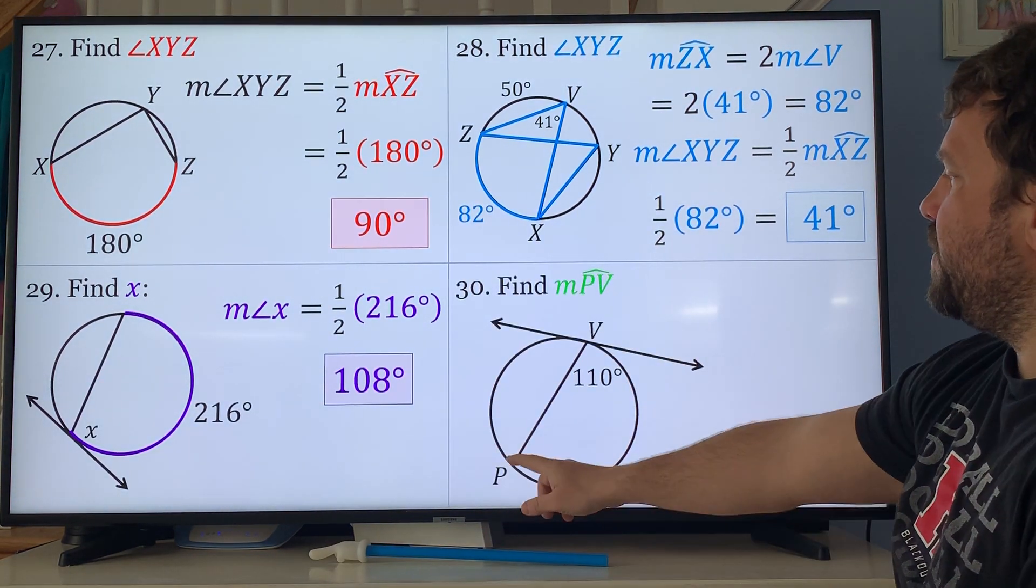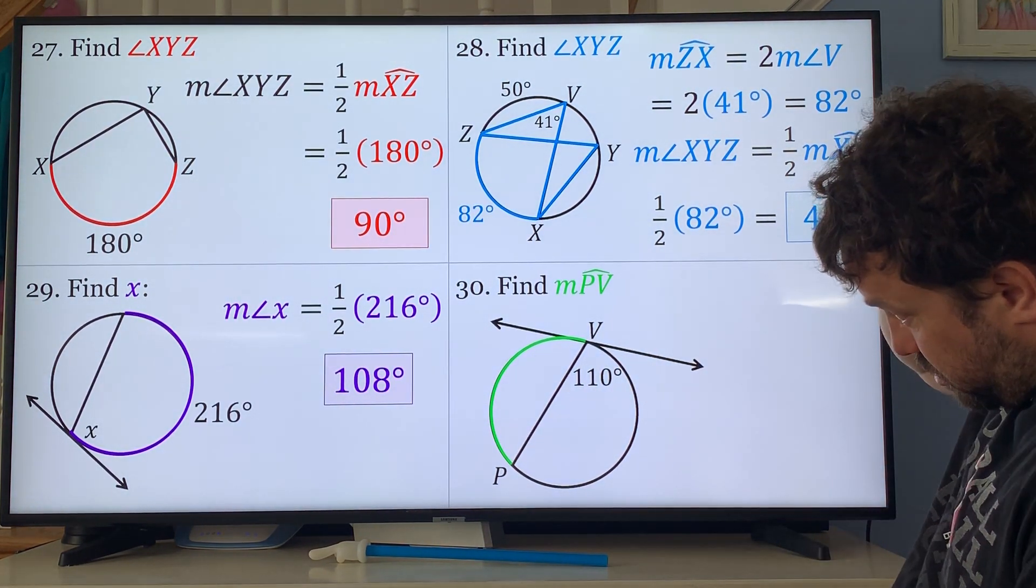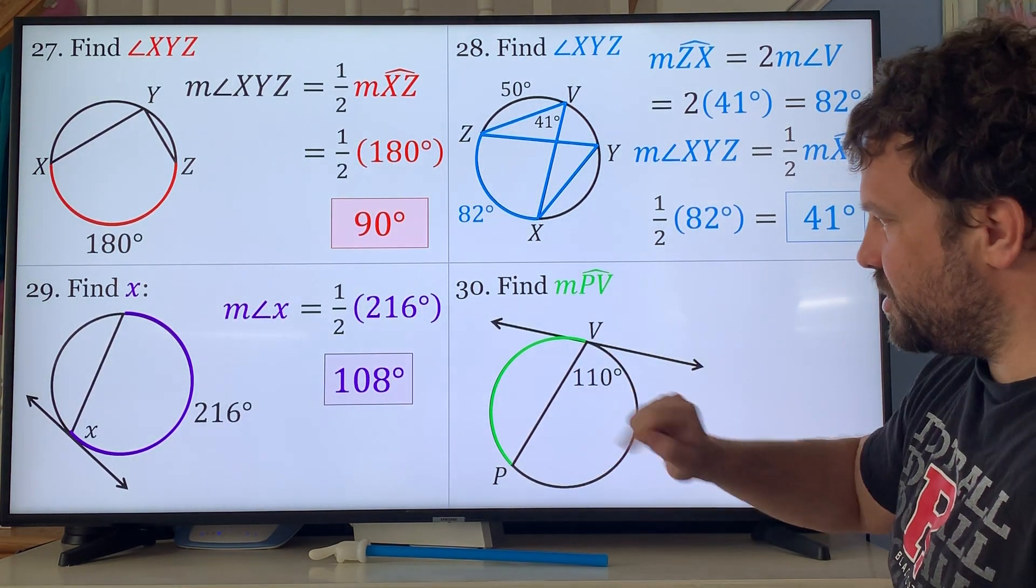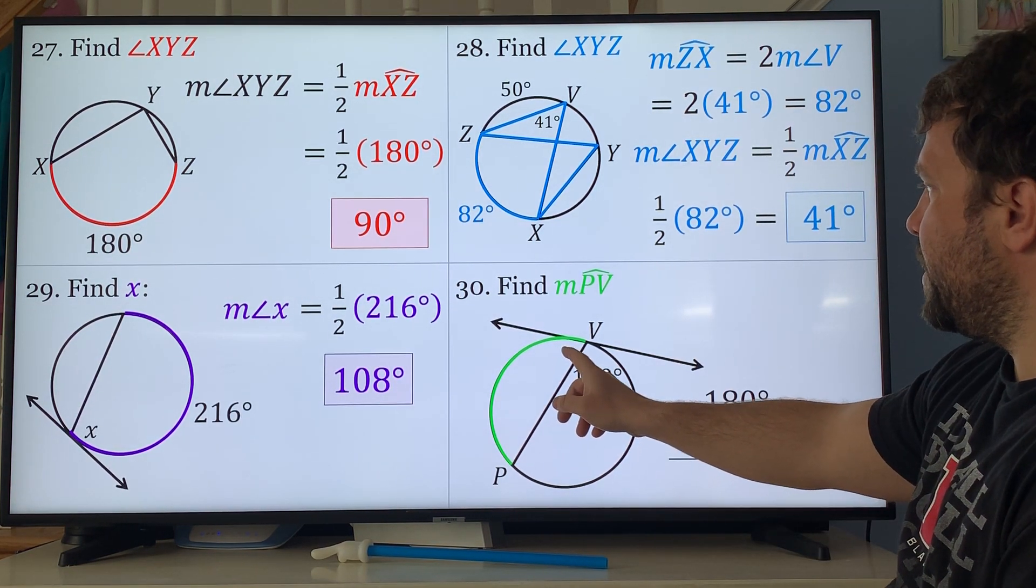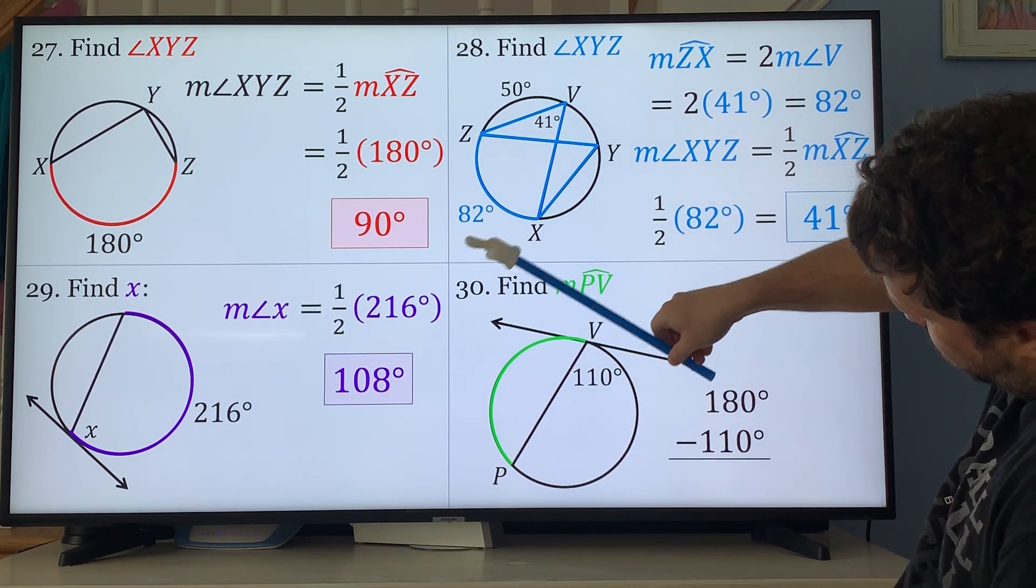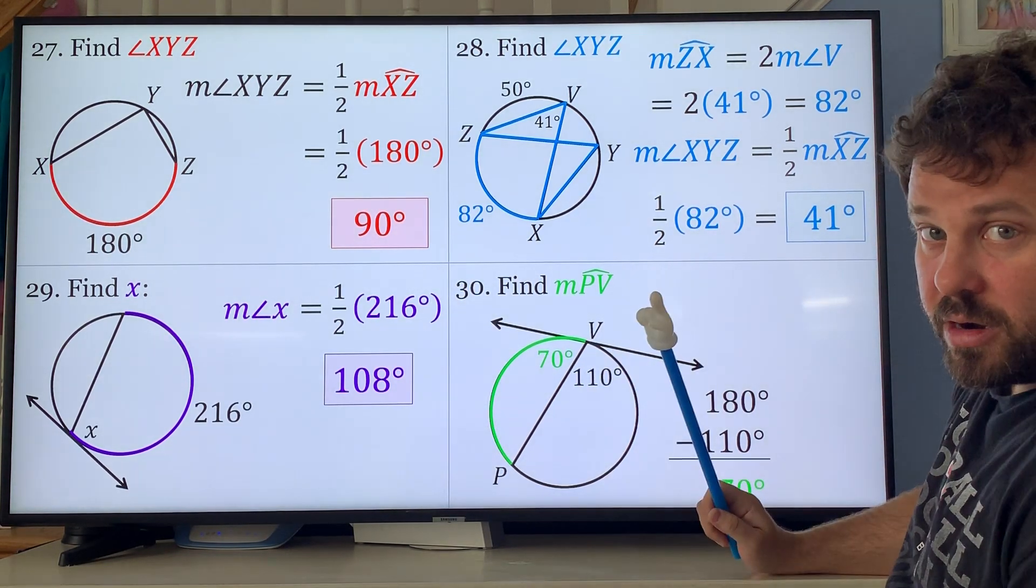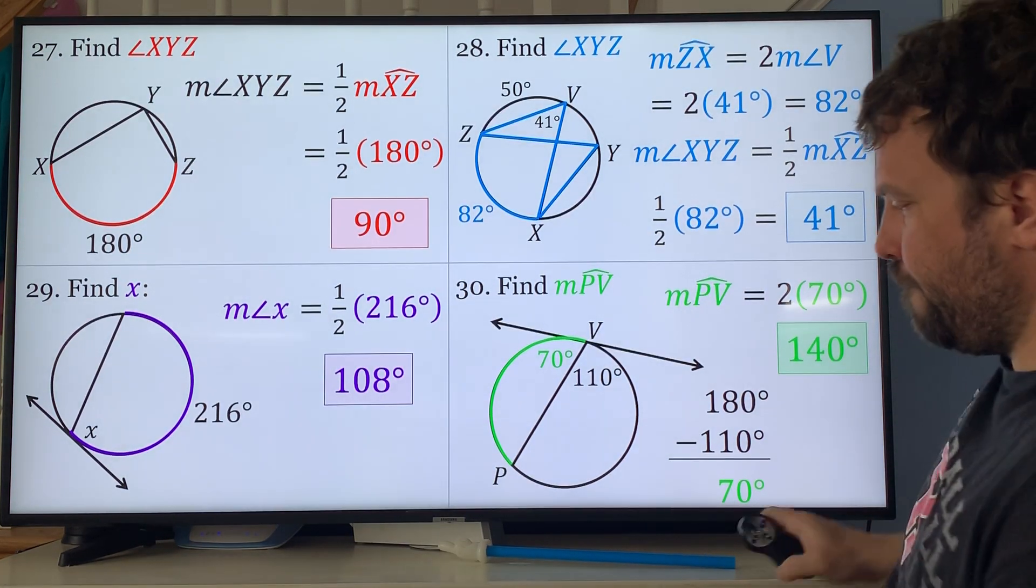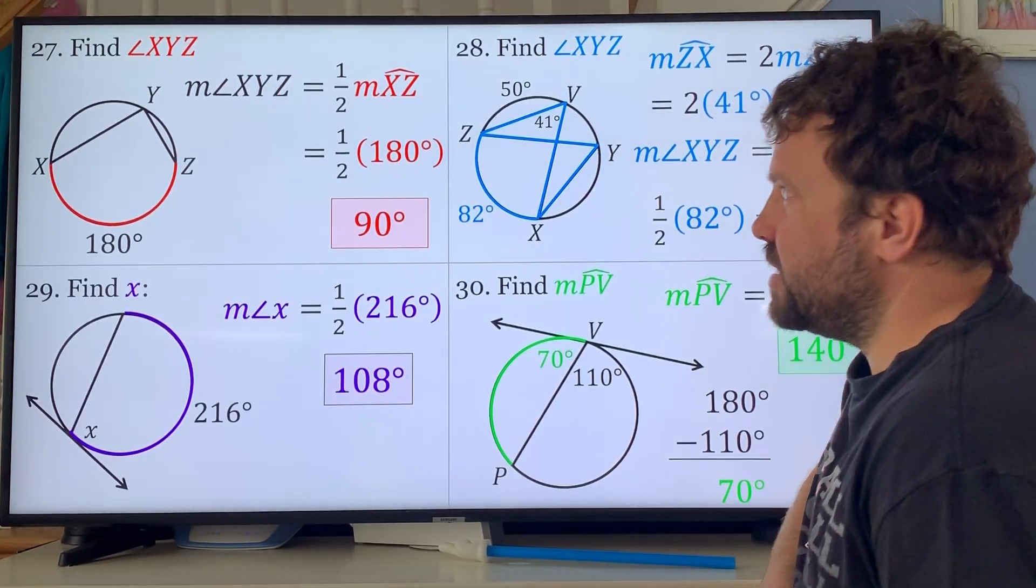Problem 30: find PV. The arc is not half the angle, but this isn't PV. This is a minor arc because it has only two letters. So what does that mean? If this is 110, we have to find out what this angle is. Straight line: 180 minus 110 is 70. So that angle is 70. How do you find that arc? Two times 70. Two times 70 is 140. Good job for those of you that got that, that was a trick one that's going to separate the people at the top from people in the middle.